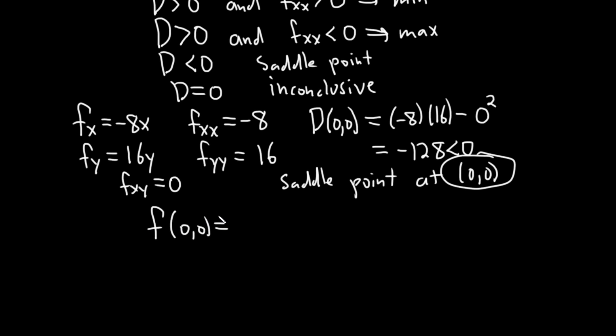So f is you plug in the 0 0 into your function. f of xy here was negative 4 x squared plus 8 y squared minus 3. So let's find the actual saddle point. Plugging in 0 0 we would get negative 4 times 0 squared plus 8 times 0 squared minus 3. So we get negative 3. So the saddle point is actually 0 0 negative 3.